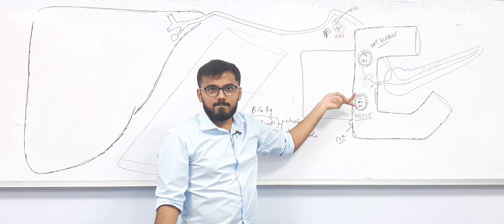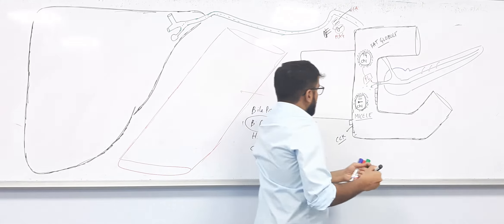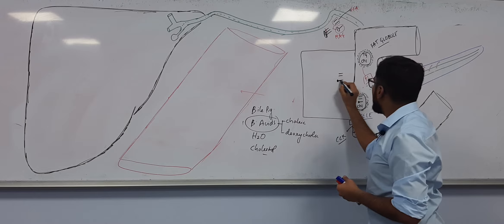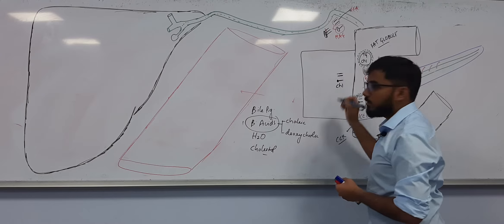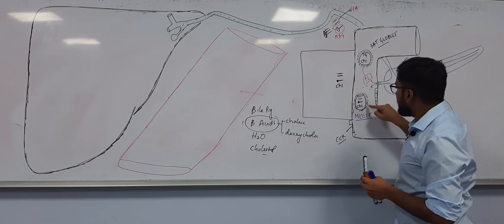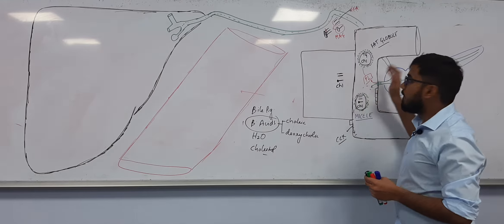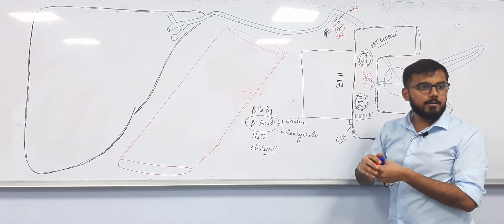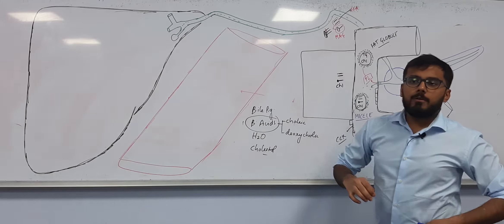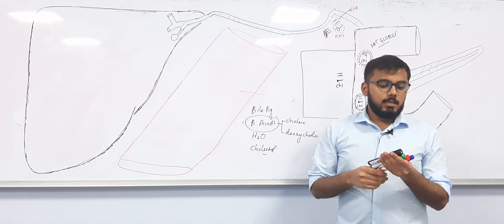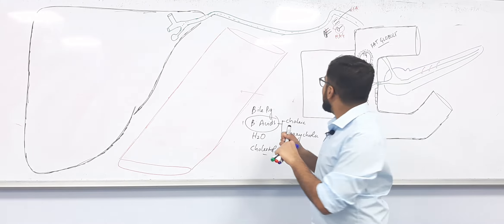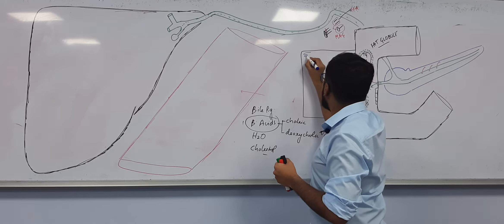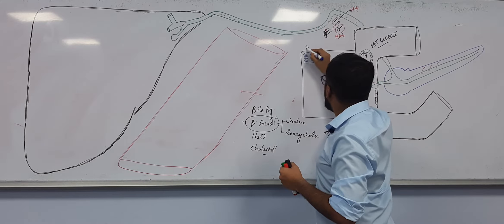So the free fatty acids, monoacylglycerol, and cholesterol have entered the enterocyte. Every cell in your body has endoplasmic reticulum. This cell has two types: smooth endoplasmic reticulum (SER) and rough endoplasmic reticulum (RER) — the RER has ribosomes.